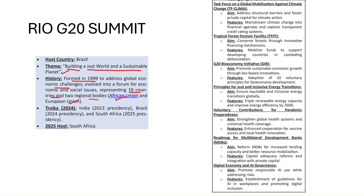In the 2023 edition of the G20, held in India, a troika was formed to assume the presidency. India held the presidency in 2023, this year it was Brazil, and next year South Africa will preside. Key outcomes of the Rio G20 Summit include the Task Force on Global Mobilization against Climate Change, the Tropical Forest Forever Facility, the G20 Bioeconomy Initiative, and Digital Economy and AI Governance discussions.